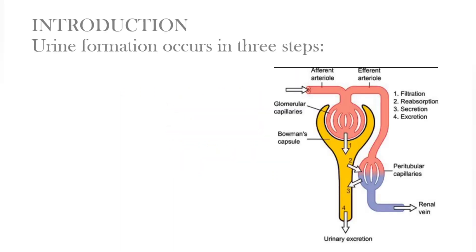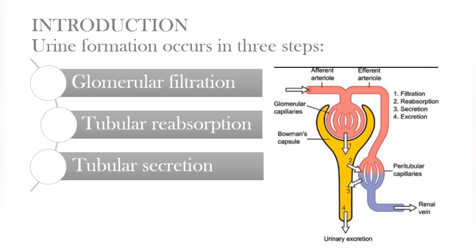Before going to the topic, urine formation occurs in three steps: glomerular filtration, tubular reabsorption and tubular secretion. In glomerular filtration, blood from afferent arterioles passes through glomerular capillaries into Bowman's capsule to produce ultra-filtrated tubular fluid. The tubular fluid protein will be very low.